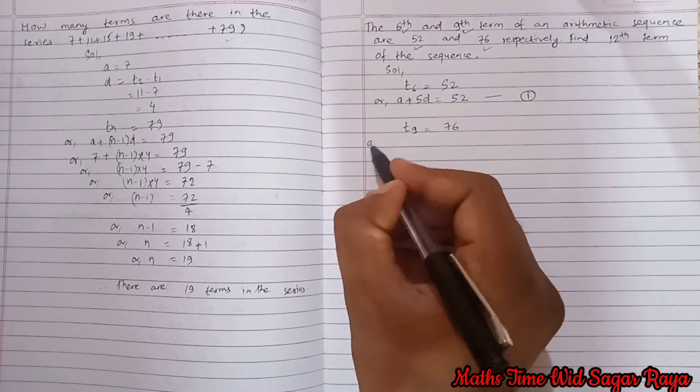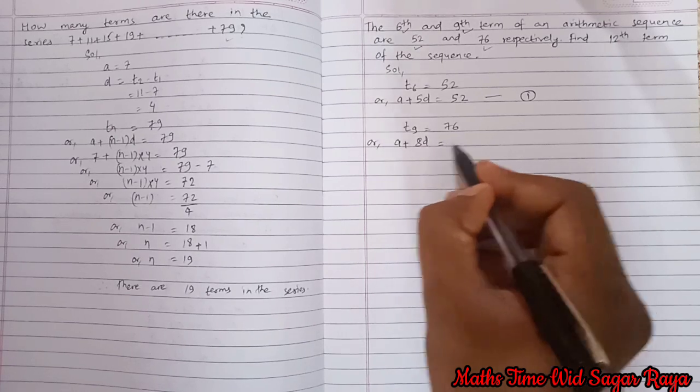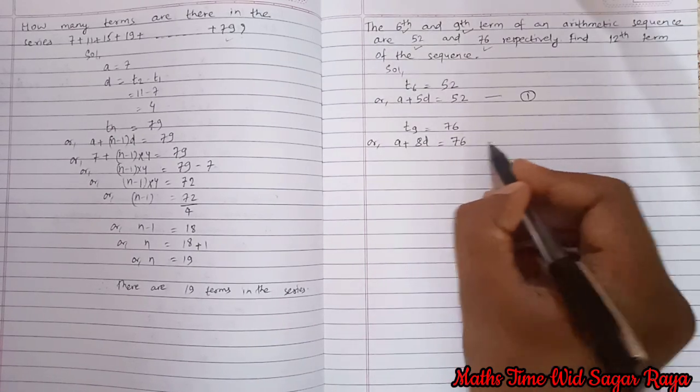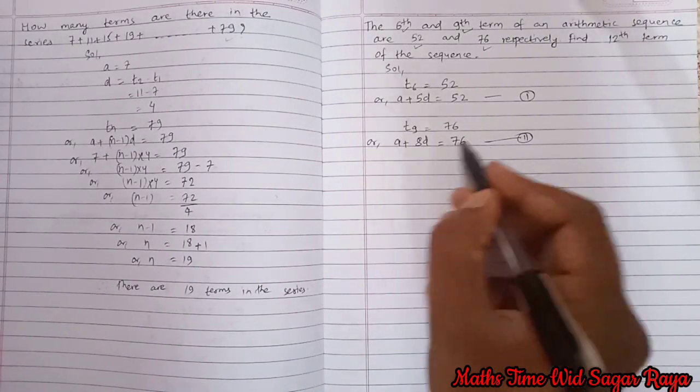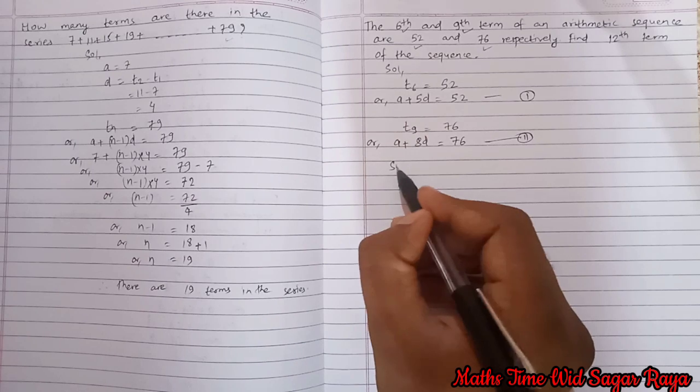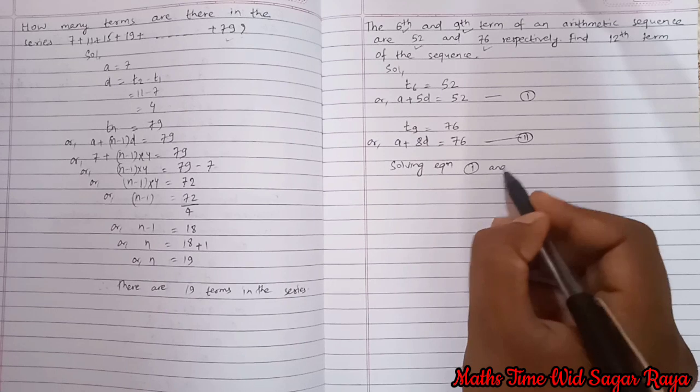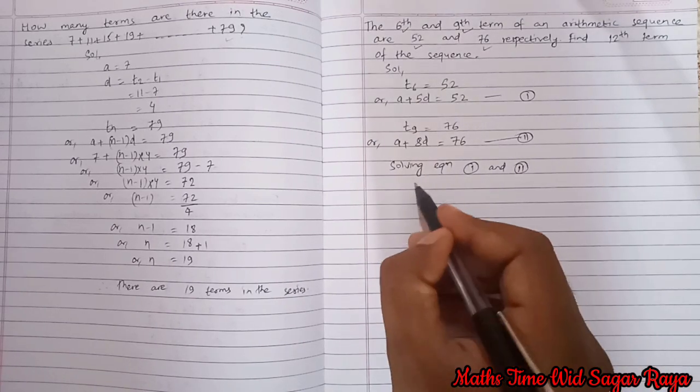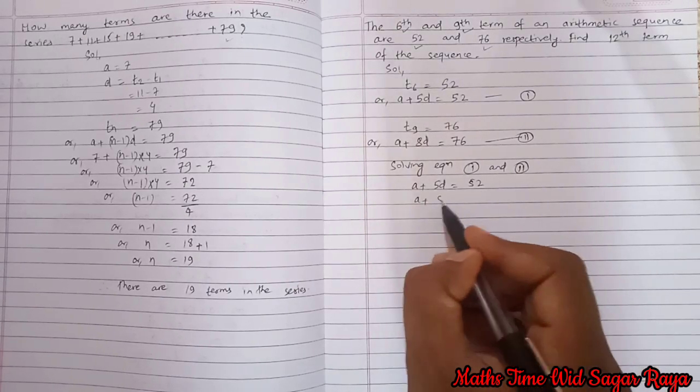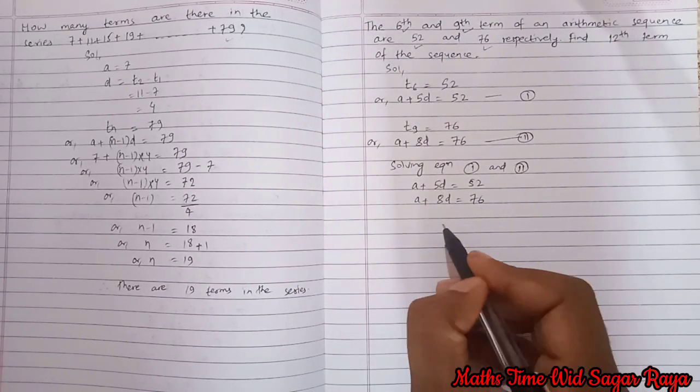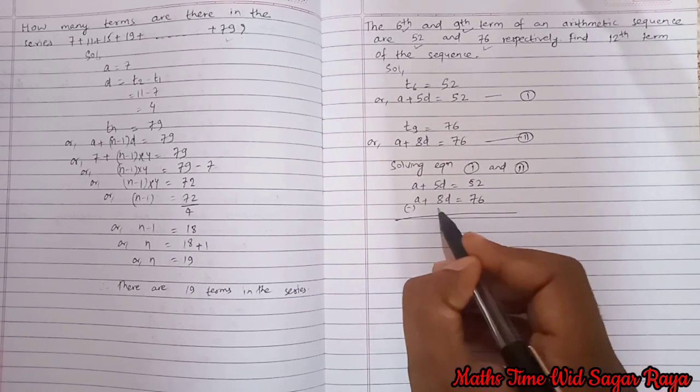So t9 is equal to a plus 8d equal to 76. So let it be equation 2. Now we can solve this equation. Solving equation 1 and 2: a plus 5d is equal to 52, a plus 8d is equal to 76. Now we can subtract this.